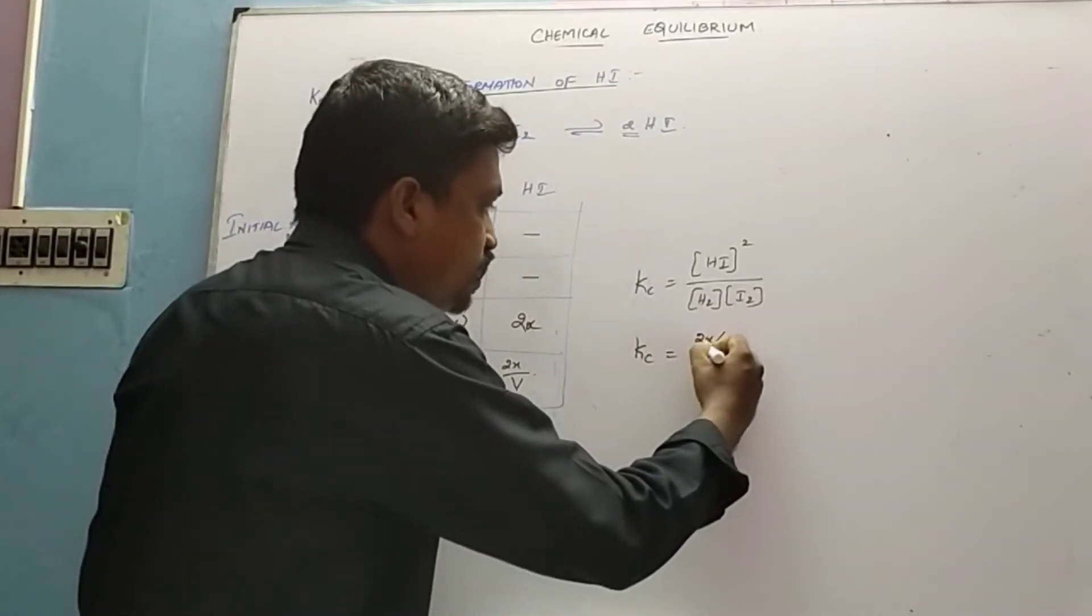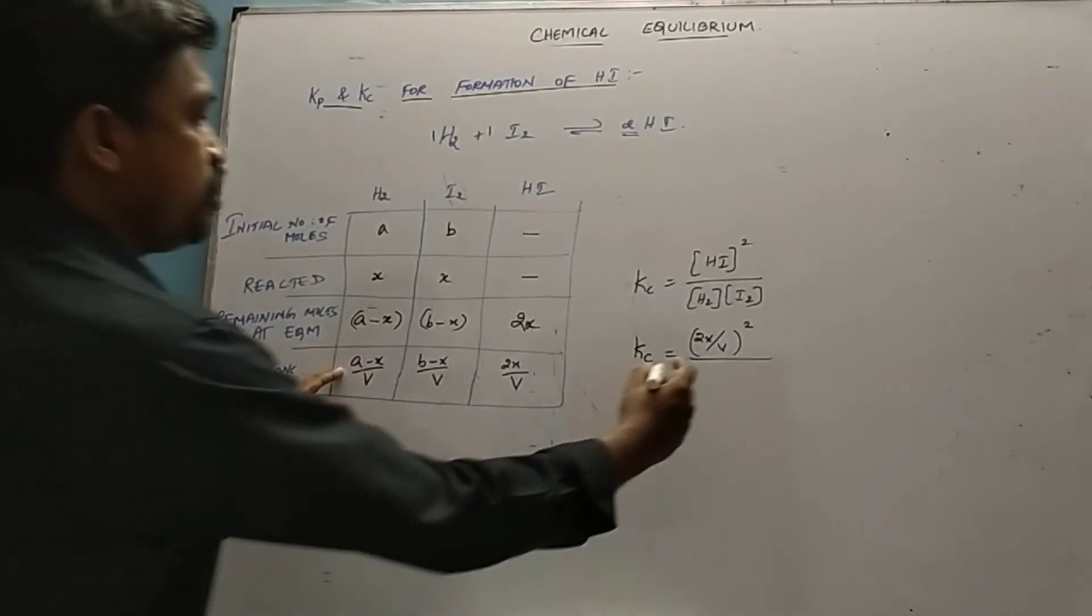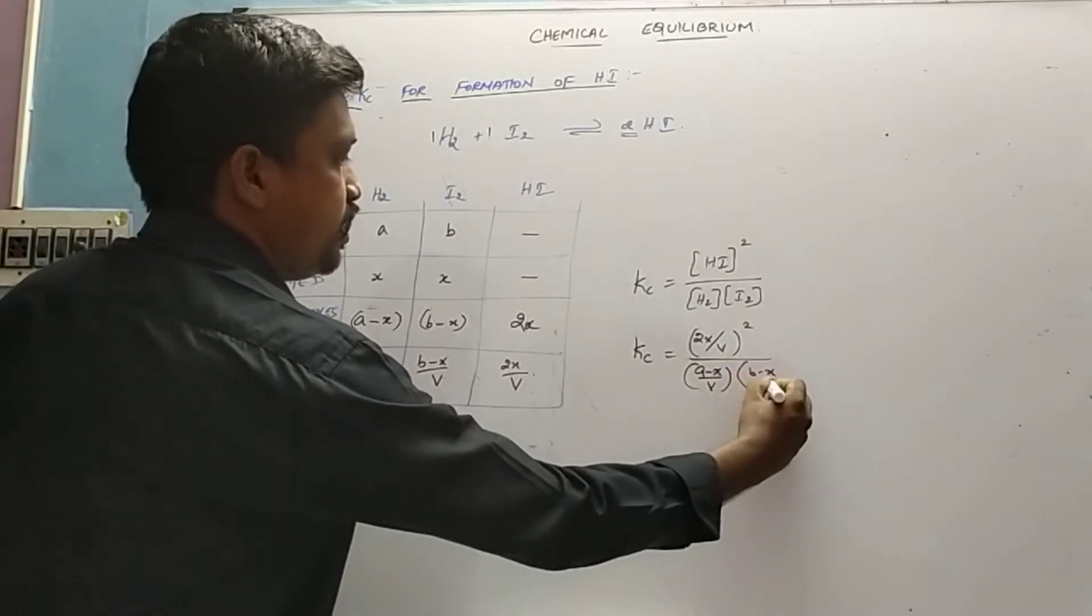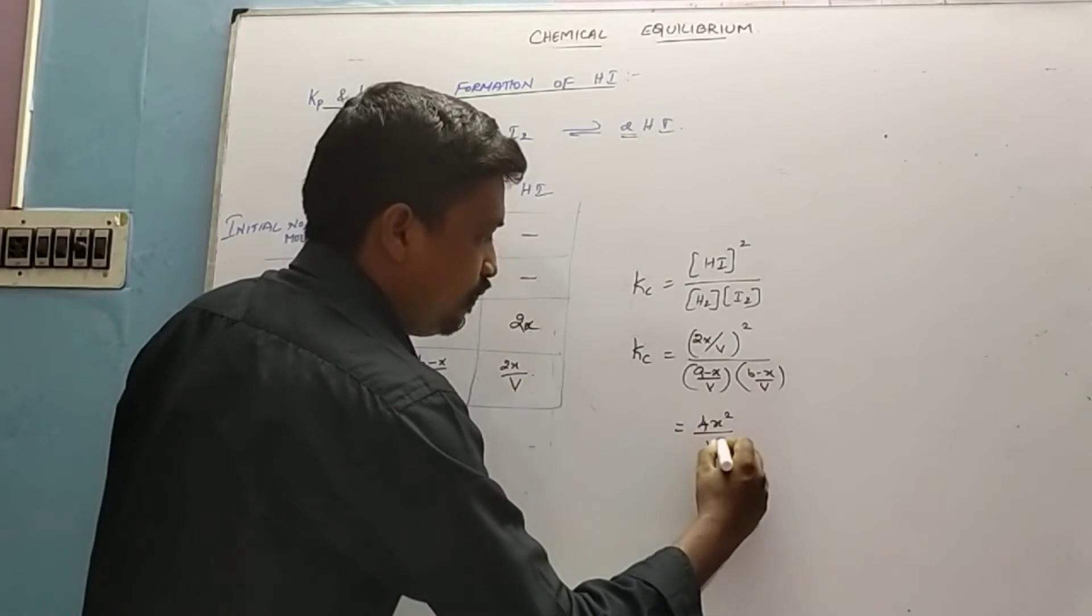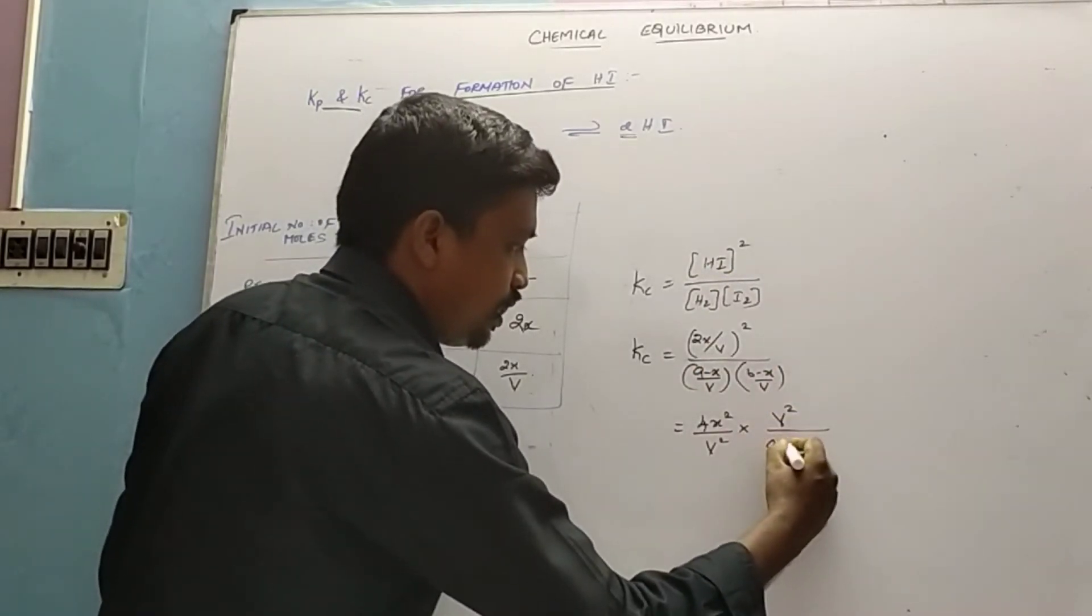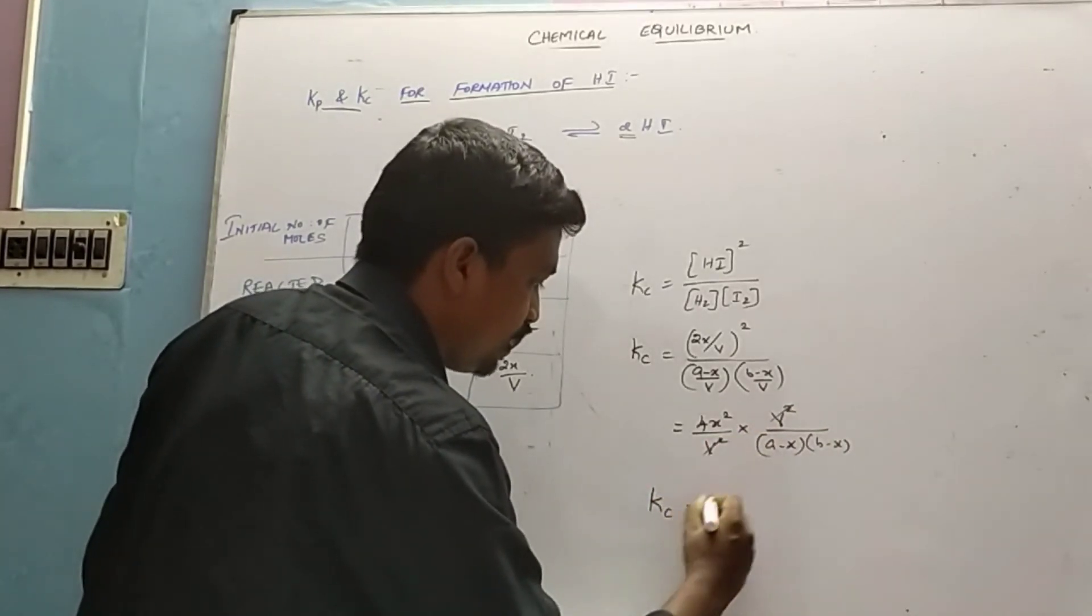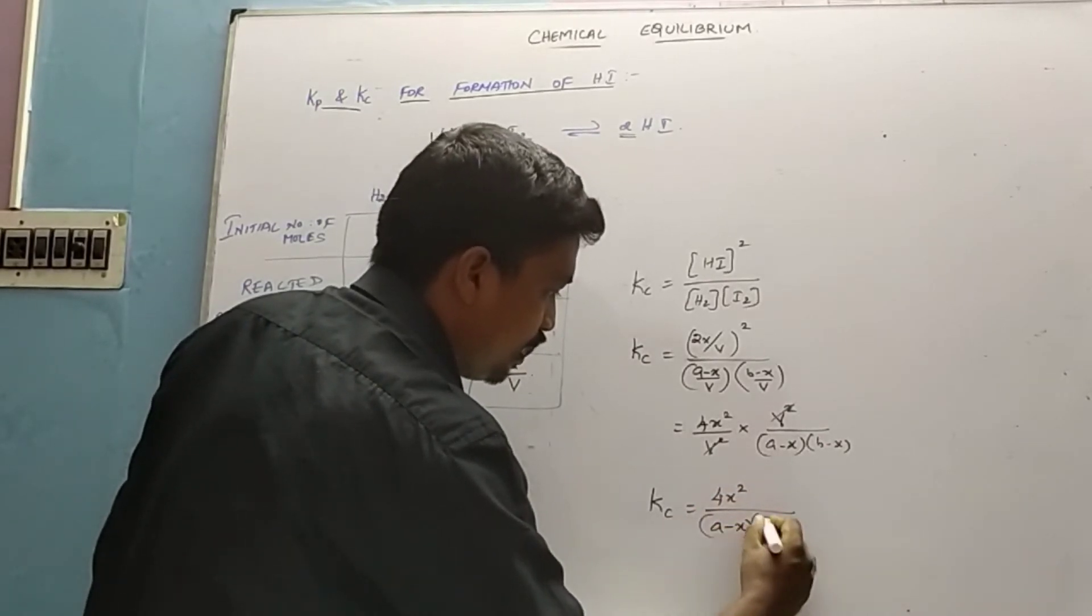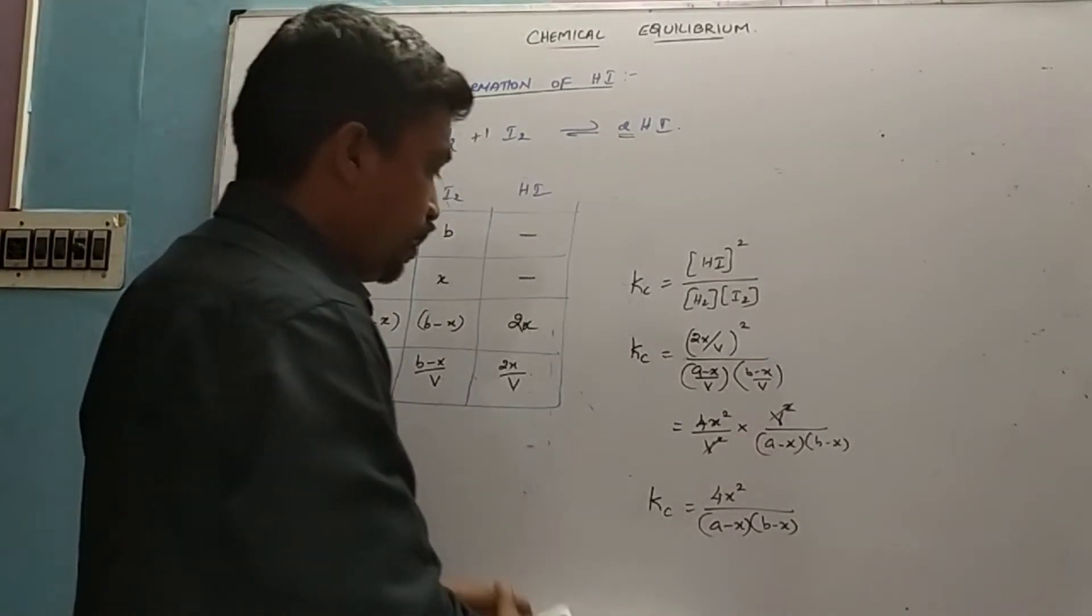Divided by concentration of H2, which is (a minus x) by V, times concentration of I2, which is (b minus x) by V. On simplification: 4x² by V² times V² by (a minus x)(b minus x). V² cancels, so the value of Kc is 4x² divided by (a minus x)(b minus x).